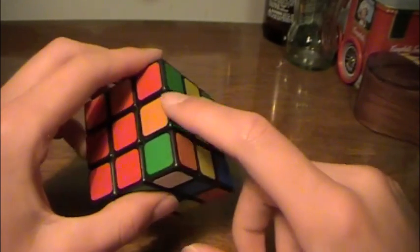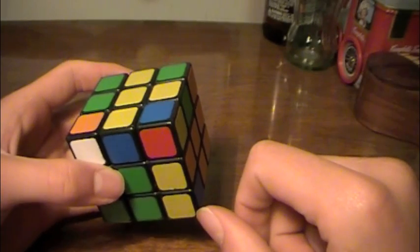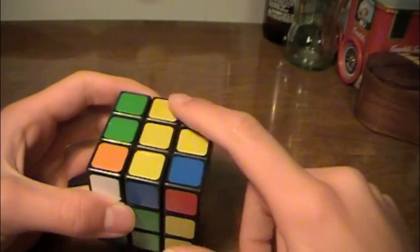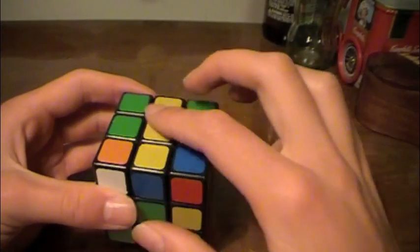Basically what you're going to do is put this edge in here, but do it creatively, so that in the process you permute these edges.